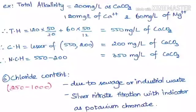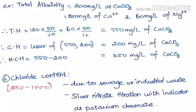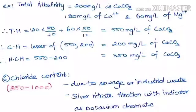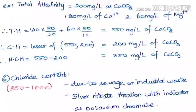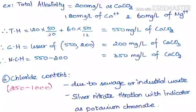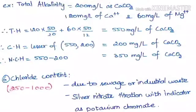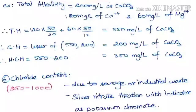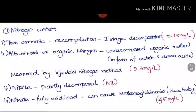The next characteristic is chloride content. The desirable limit per IS code is 250 ppm and the permissible limit is 1000 ppm. Chloride presence is due to sewage and industrial waste discharged into rivers. If chloride content is high in raw water, it indicates sewage mixing. Chloride is measured by silver nitrate titration with potassium chromate as the indicator.